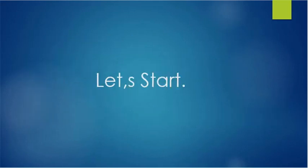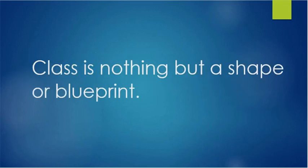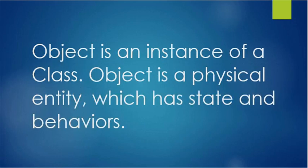Now let's start with object-oriented programming. In object-oriented programming, the main theme is object-based programming. What is a class? In object-oriented programming, a class is nothing but a shape or blueprint.